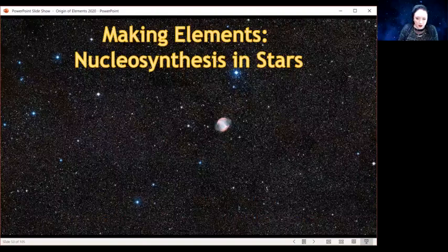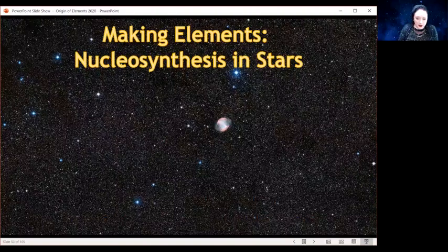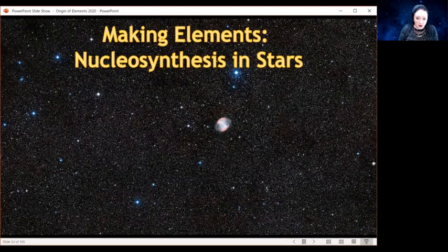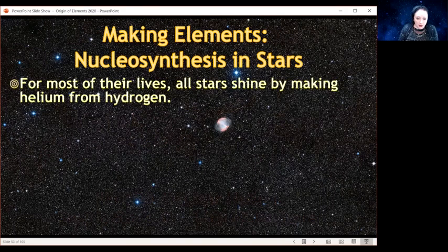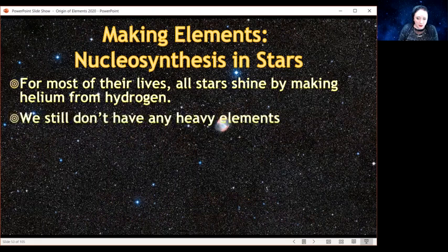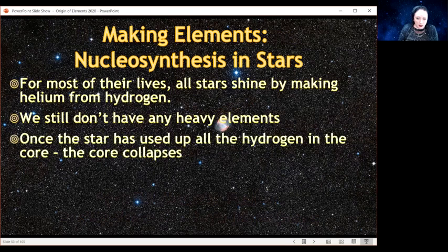So in a previous video we talked a little bit about nucleosynthesis, that is, making new elements inside of stars. For most of their lives, all stars are just using hydrogen to make helium and shining as a result of that. But we don't have any heavier elements. We made helium in the Big Bang, we're still making helium inside stars, but we need to make some heavier elements.